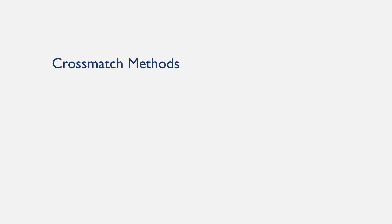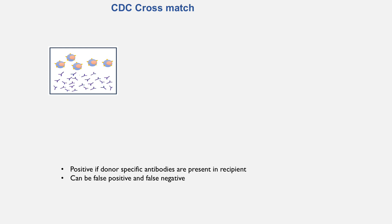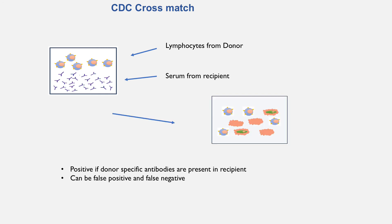Now we will discuss different methods of cross-match. In cross-match, we identify if a recipient has antibodies to donor-specific antigens. One method is by CDC technique: we take recipient serum and add lymphocytes from the potential donor. If recipient serum has antibodies to donor HLA molecules, this results in a positive reaction — meaning positive cross-match — indicating the person has antibodies to donor-specific HLA molecules. This is generally considered a contraindication to transplant. We can perform cross-match on T cells or B cells to determine if antibodies are against class 1 or class 2 molecules.